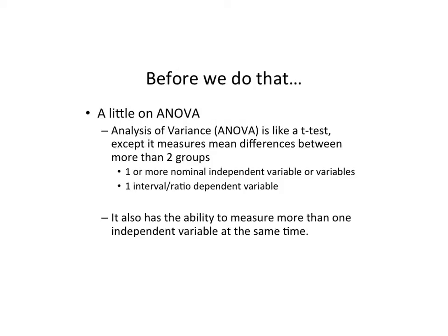In ANOVA, we can have one or more independent variables — multiple independent variables. They're all going to be nominal, just like t-tests, but we can have independent variables that have three groups, four groups, and so on. ANOVA also has the ability to have multiple independent variables at a time, which allows more variability in what we can do in terms of assessing reliability.